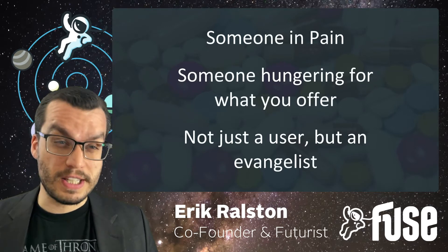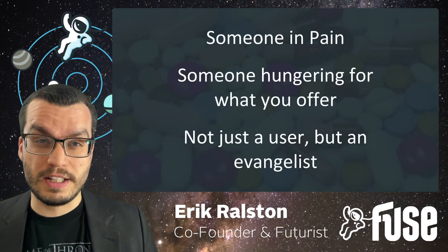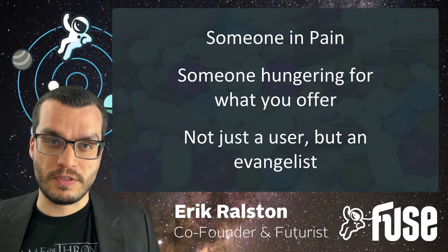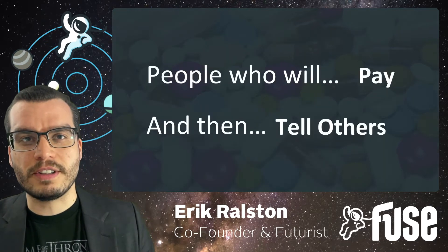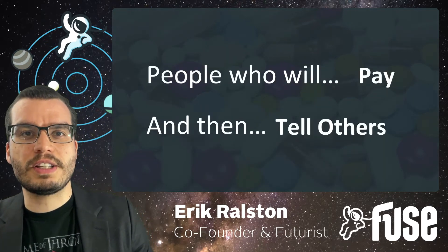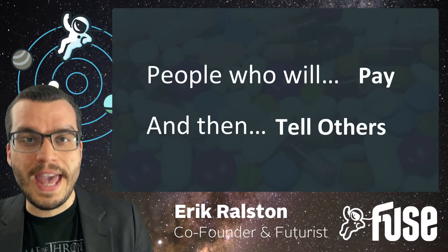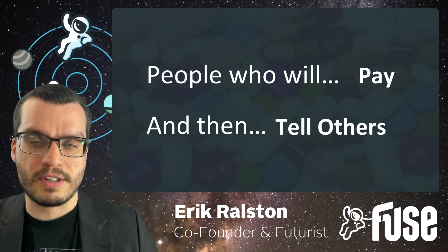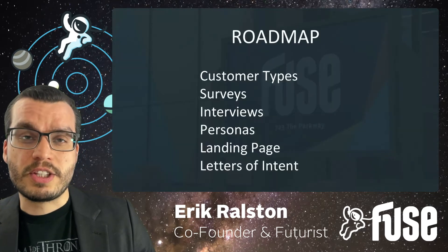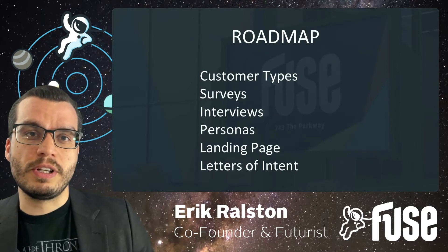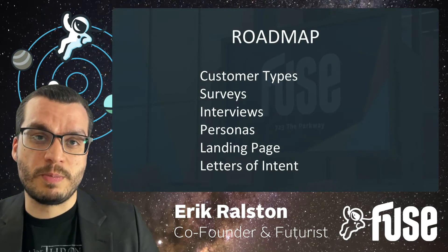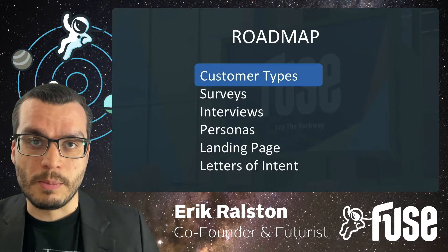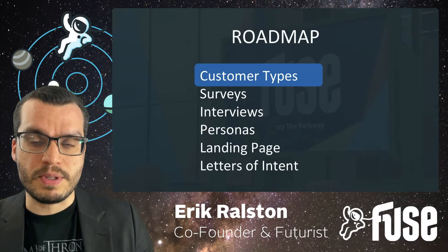For the first slate of customers, it's not just that they're a user of the product, but they're an evangelist for the product. An evangelist is someone who will pay for the product and then tell others about it — they'll be the champion. In this customer validation journey, we're going to cover a six-part roadmap. This video covers step number one: defining your customer types.